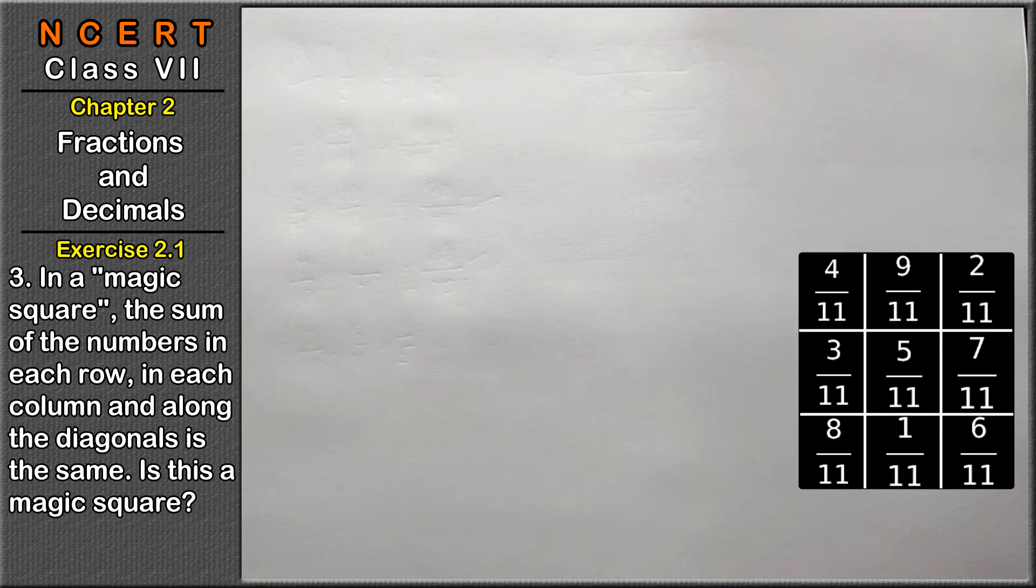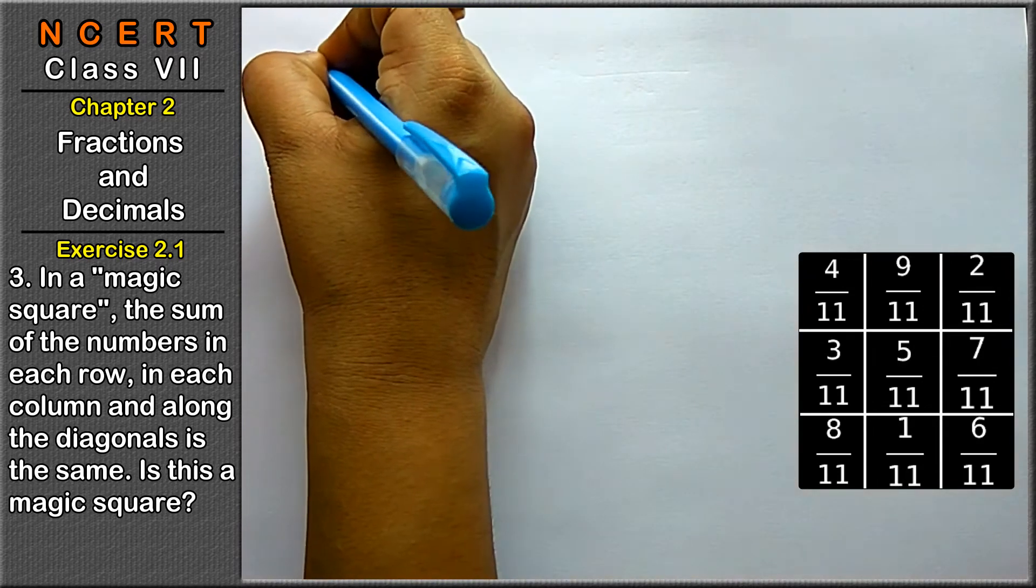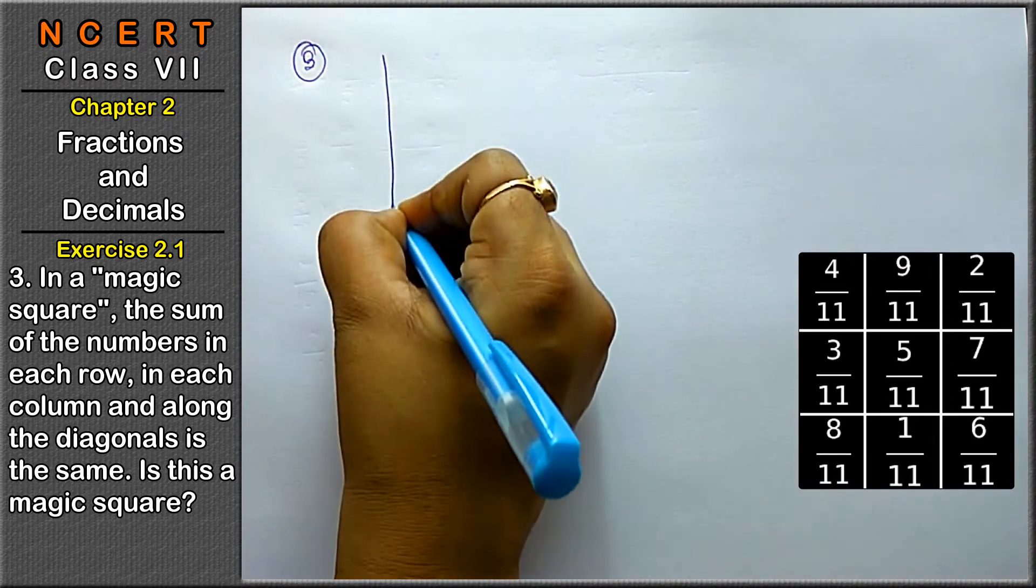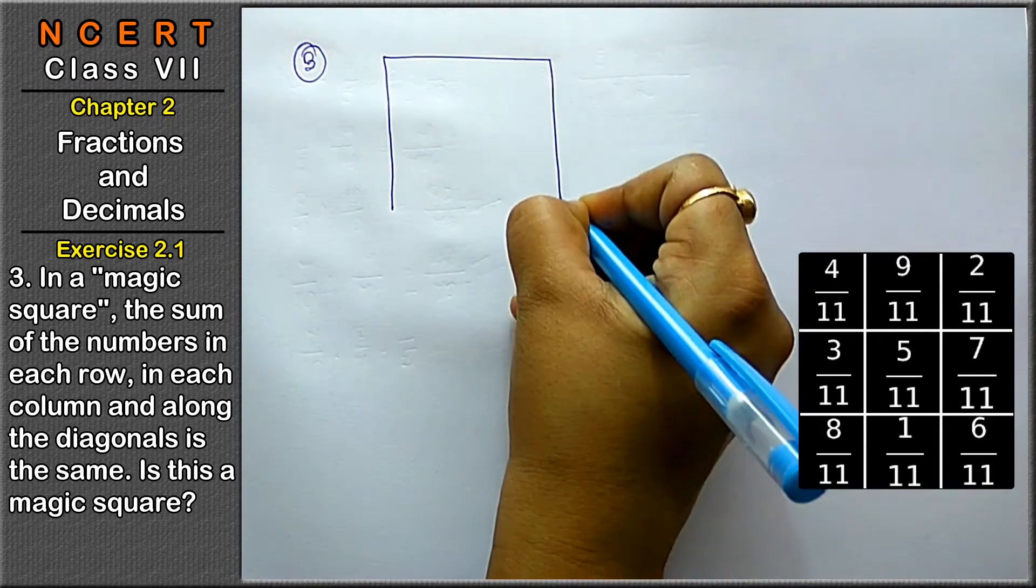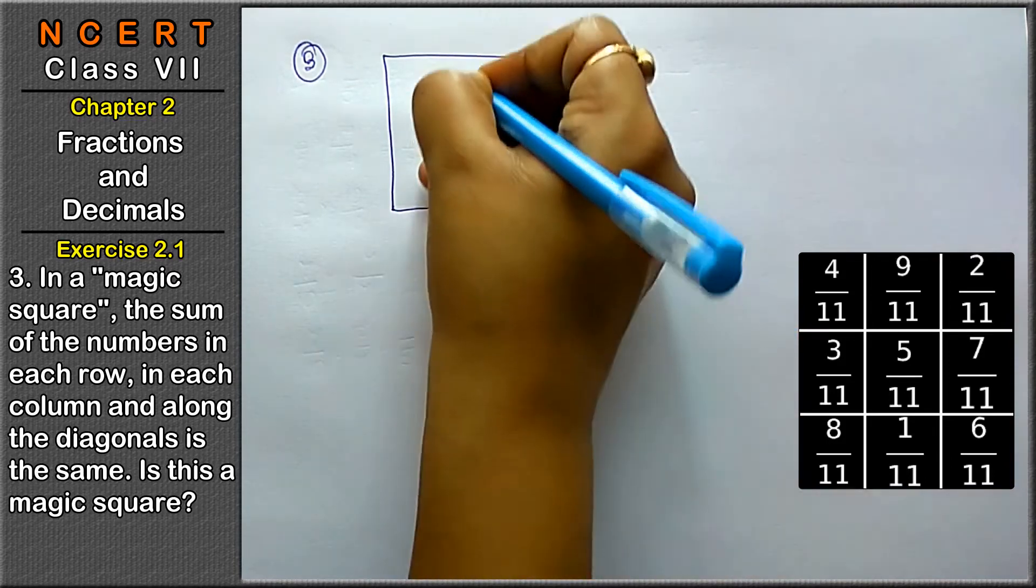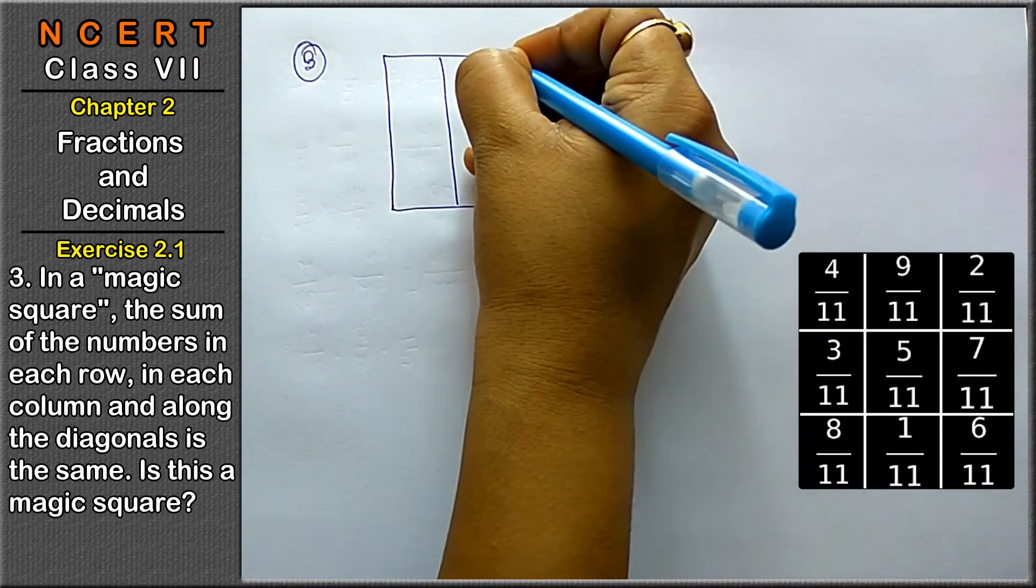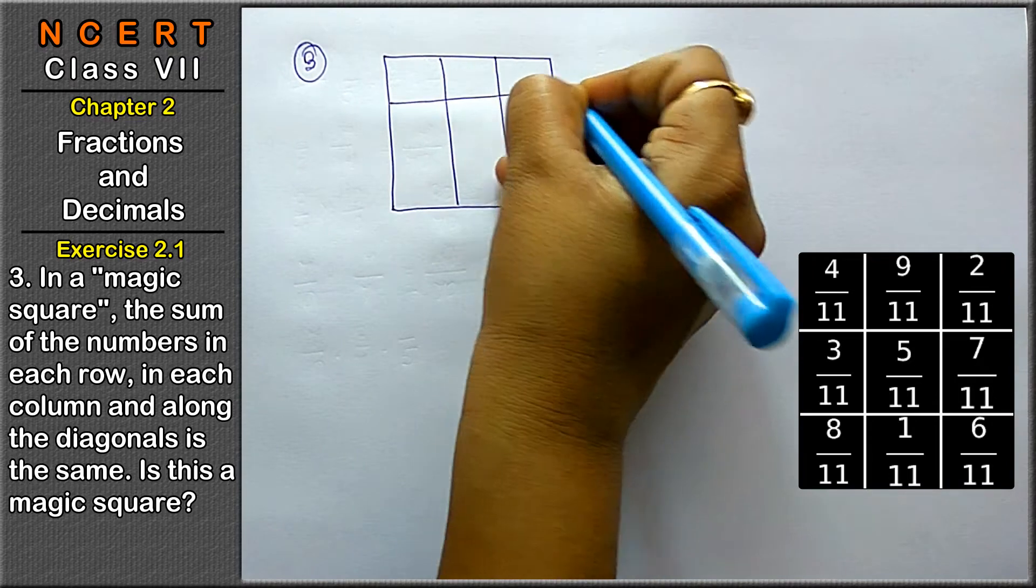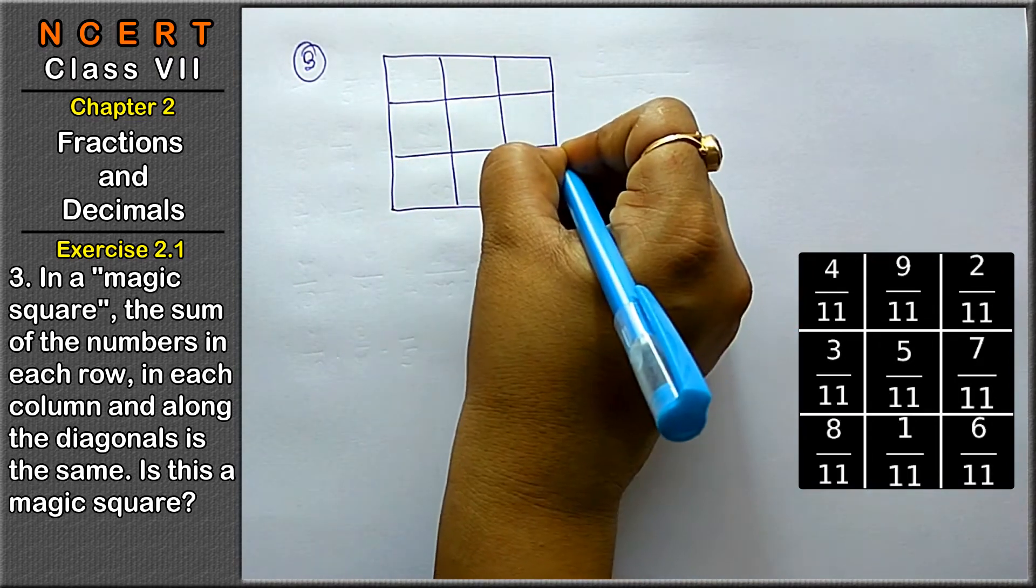Hello friends, welcome to Learn Maths. Today we will do Chapter number 2, that is Fractions and Decimals, question number 3. Question number 3 is, let's make the magic square. First, what is magic in that? Let's see, there are nine blocks.